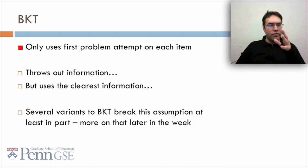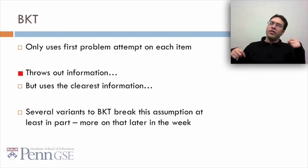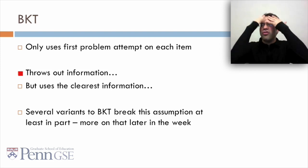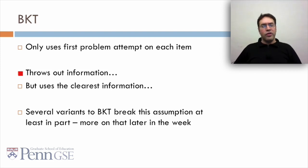A few notes about BKT. First of all, BKT only uses the first problem attempt on each item. This throws out lots of information. I mean, if you think about it, a student gets something wrong, then they get it wrong again, and then they get it wrong again, then they get it wrong again, then they finally get it right, is different than if a student gets it wrong and then three seconds later goes, oh shoot, I did a two instead of a three, and they get it right. So this throws out a lot of information. But on the other side, it uses the clearest information. Several variants to BKT break this assumption, at least in part, and we'll talk about that more later in the week.